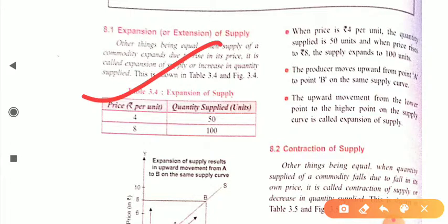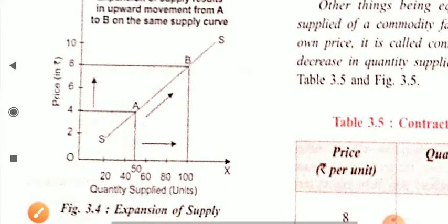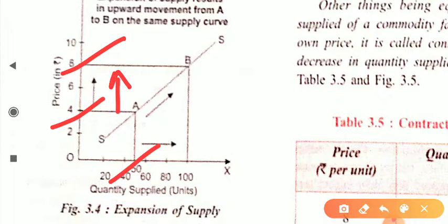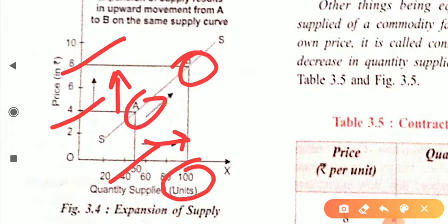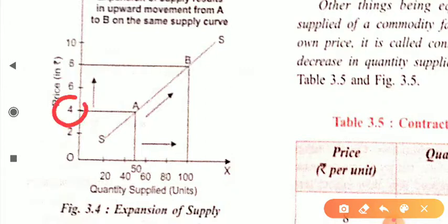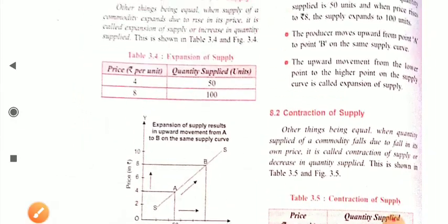We can see with a table that when price increases from 4 to 8, quantity supplied also increases from 50 to 100. In the diagram, initially at price 4 the quantity supplied is 50 — that is point A. When price increases from 4 to 8, quantity supplied increases to 100 — that is the new point B. Moving from A to B along the supply curve is known as extension of supply.